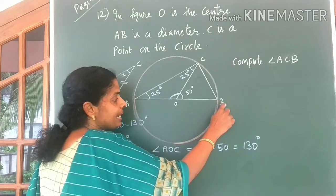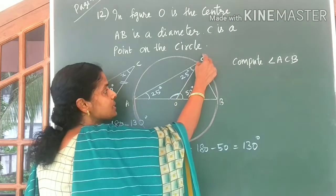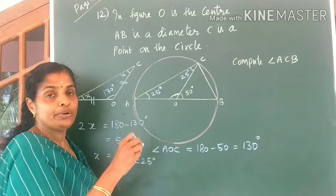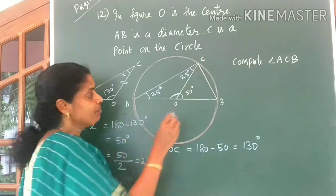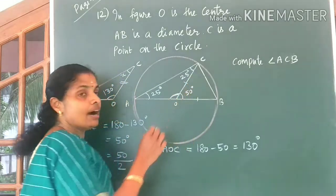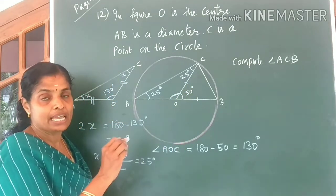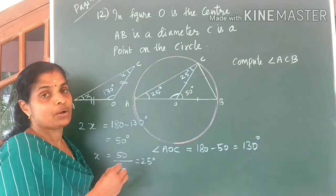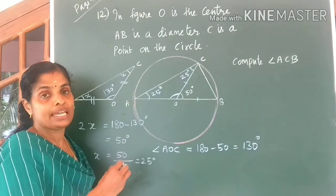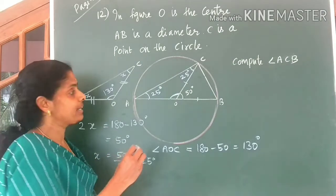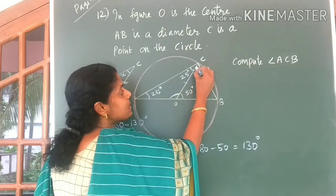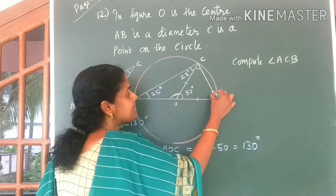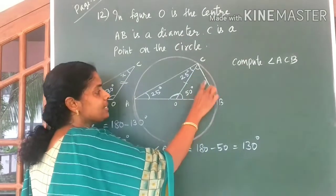Now come to triangle BOC. Now what do you know about triangle BOC? Same idea. BO and OC are the radii of the same circle. They are always equal, hence BOC is an isosceles triangle. This angle is 50 degrees. So what can you say about these two angles? How do you get these two angles?